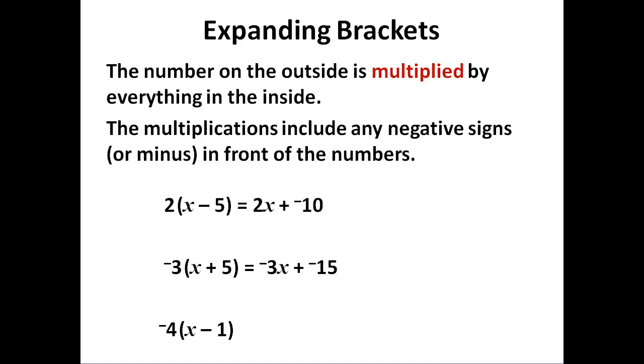With double negatives we have to be careful. We have 2 minus signs. So when I multiply it out, I get minus 4 times x and minus 4 times minus 1, which is plus 4.